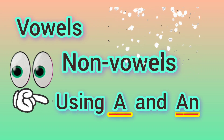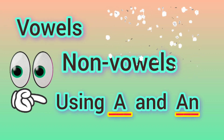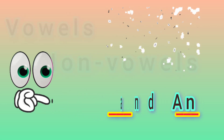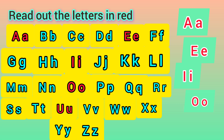Let's learn vowels and non-vowels using A and AN. Read out the letters in red. A, E, I, O, U.